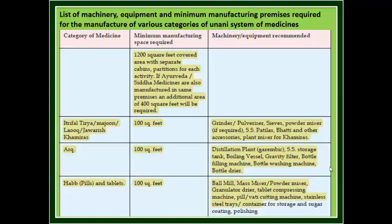Now we will see the list of machinery used for the Unani system of medicine. The general requirement for space is the same as Ayurvedic and Siddha system, that is 1200 square feet covered area with separate cabins and partitions for each activity. If Ayurveda, Siddha, and Unani are all in the same premises, then an additional 400 square feet will be required separately.